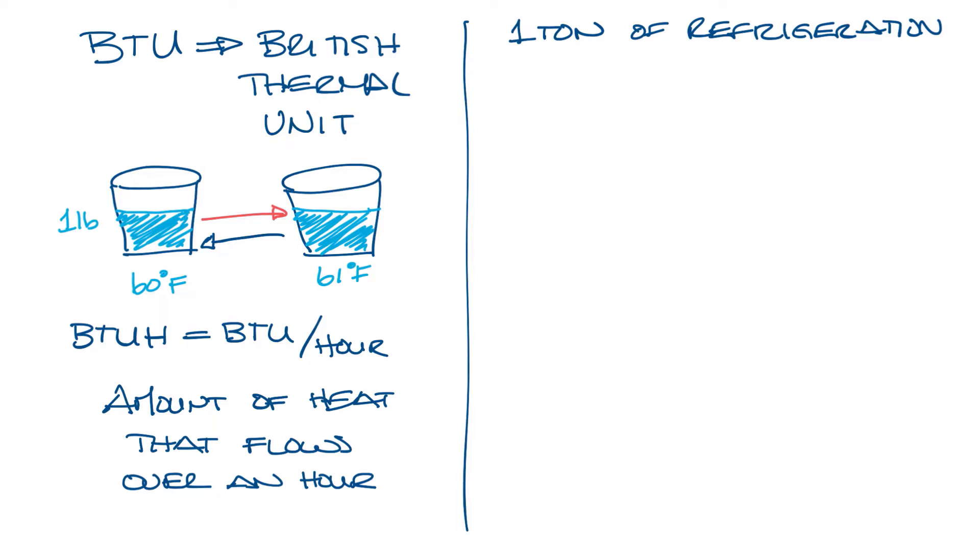A ton is a measure of heat transfer capacity. Specifically, a ton of cooling is what would be required to melt 2,000 pounds, also known as a short ton, of ice over a 24-hour period.